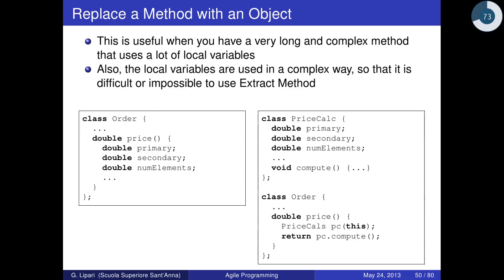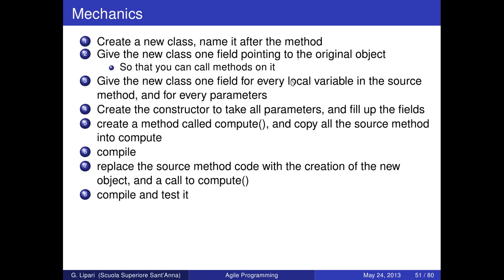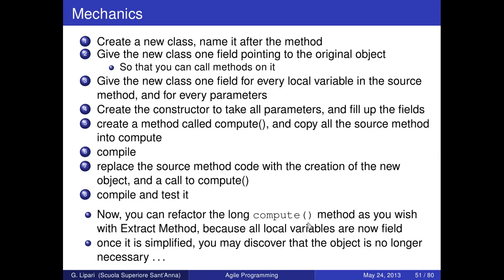Why do you want to do that? Because now it's easier to refactor 'compute' than to refactor the original 'price' method, because now all local variables are fields of the object. You can split 'compute' into several functions. Once all tests run smoothly, you can refactor the long 'compute' method as you wish using Extract Method, because all local variables are now fields. Once simplified, you may discover the object is no longer necessary, or that you've reduced the amount of code significantly because the resulting algorithm is much simpler.